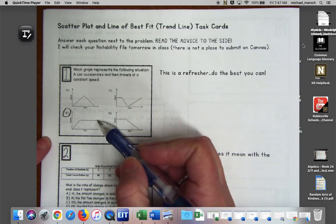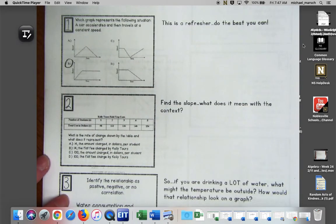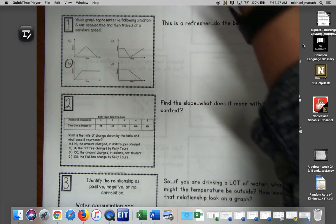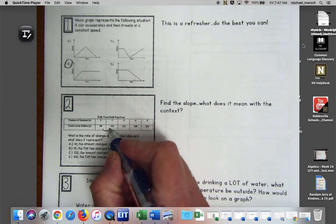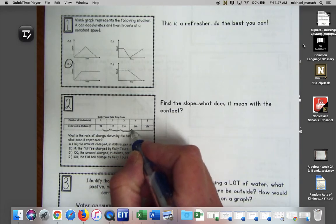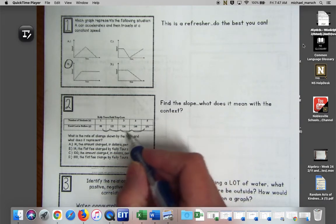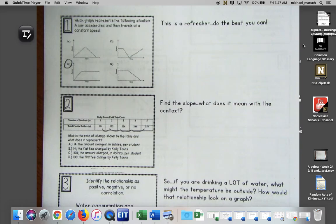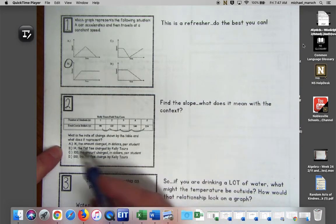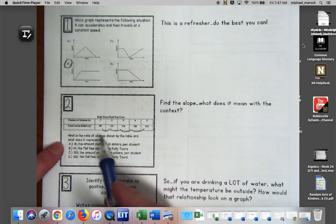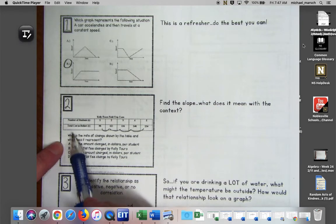Question two, find the slope. What does it mean within the context? If I'm looking for the slope here, I'm going to see how much do I add each time, and it looks like I'm adding 14 each time, right? So that's going to be 14 over 1.